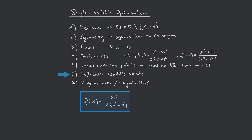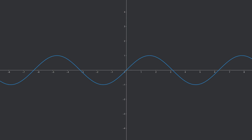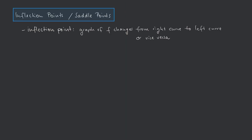We now turn to step 6: inflection points and saddle points. Loosely speaking, an inflection point is a point where the graph of f changes its curve direction — for instance from a left curve to a right curve or vice versa. A saddle point is an inflection point with the additional condition that it has a horizontal tangent.